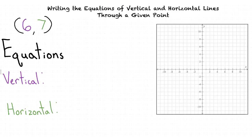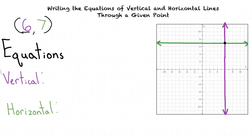So vertical lines always have equations of the form x equals a, where a is the value of the x-intercept of the line. And horizontal lines always have equations of the form y equals b, where b is the value of the y-intercept of the line. Correct! Based on this information, we can find the equations of the vertical and horizontal lines that pass through our given point. Since the x-value of the point is 6, the equation of the vertical line will be x equals 6. Since the y-value of the point is 7, the equation of the horizontal line will be y equals 7.